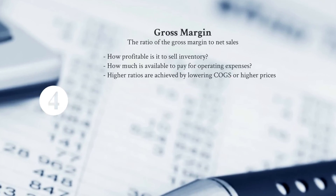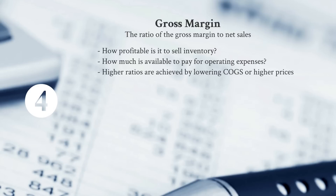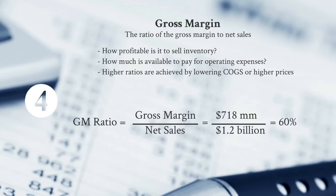Number four on our list is Gross Margin — the ratio of gross profit to net sales. We're looking at how profitable it is when we sell inventory and how much revenue remains beyond cost of goods sold to cover operating expenses. We get a higher ratio by reducing cost of goods sold and increasing sales price. Gross margin in dollars divided by net sales — in this case $718 million divided by $1.2 billion — gives a 60% gross margin ratio, which in most industries is very strong.